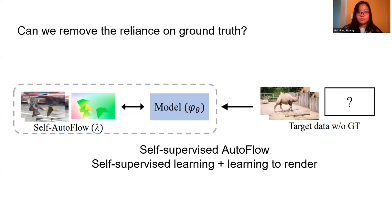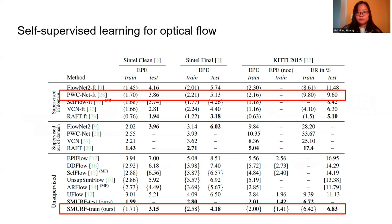The recent self-supervised model SMERC outperforms the supervised PWC-Net. This suggests that self-supervised loss is highly correlated with ground truth errors and can be used as a good proxy metric for learning optical flow.